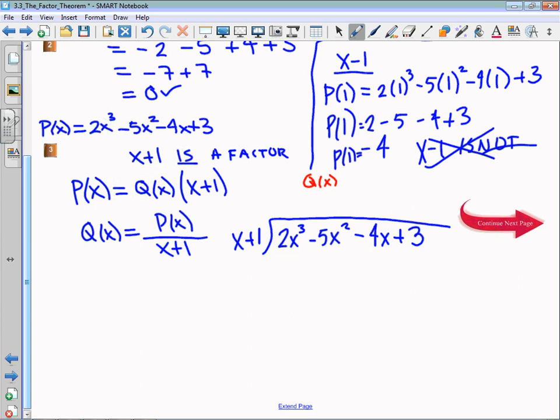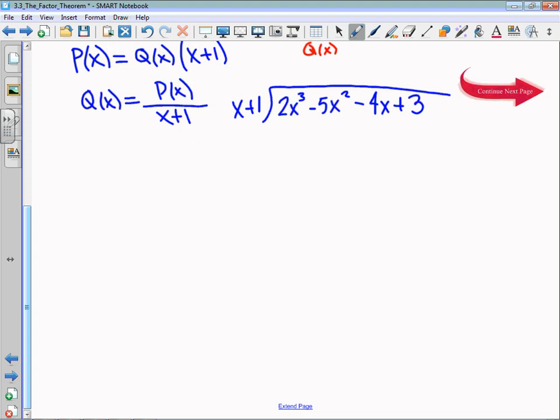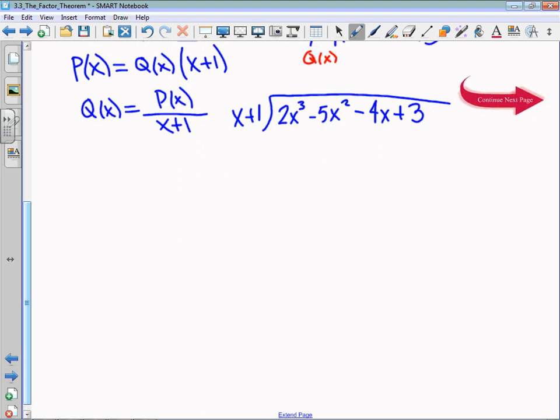Assuming we've done this correctly, we should also get a remainder of 0, because we have just finished saying that x + 1 is a factor, which means there should be no remainder. To do this long division, remember it's leading term divided by leading term. So 2x³ divided by x is 2x². I multiply that back on, I get 2x³ + 2x², and I subtract. The first term cancels as it should. -5x² - 2x² is -7x². And the -4x and positive 3 are still there.